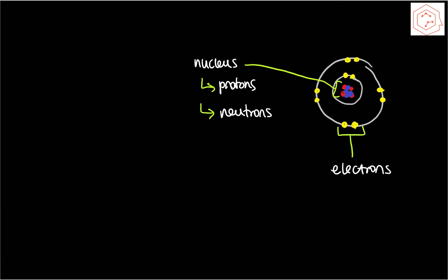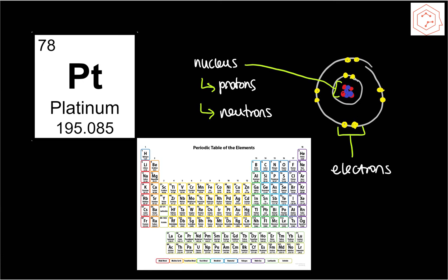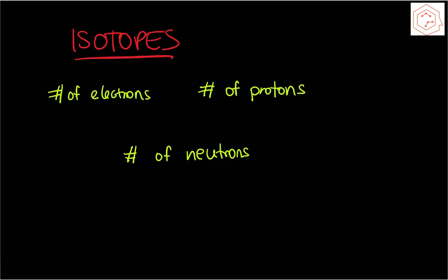Each element has a symbol recognized worldwide that is seen on the periodic table. Isotopes have the same number of electrons and protons, but the only thing that differs between them is the number of neutrons. Because they have the same number of electrons and protons, all isotopes of an element therefore have the same chemical properties.